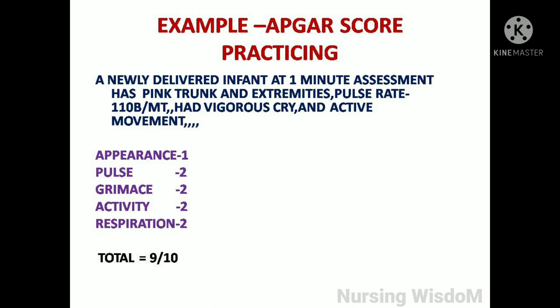So the score for appearance is 1. Pulse 110 beats per minute — score is 2. Grimace with vigorous cry — score is 2. Activity with active movement — score is 2. Respiration with active cry and no respiratory depression — score is 2. Adding these together gives a total of 9 out of 10, so this infant is in good condition.